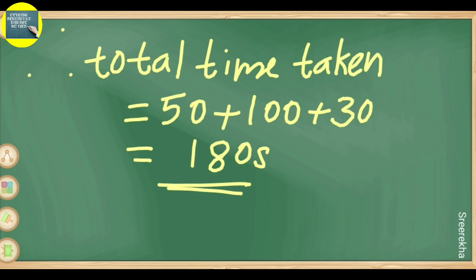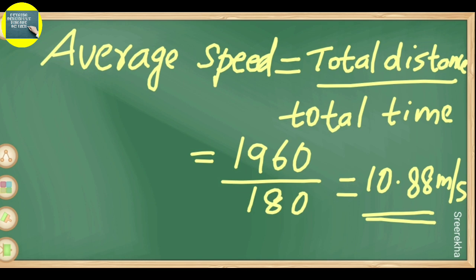Total time equals 50 plus 100 plus 30, which is 180 seconds. Average speed equals total distance divided by total time: 1960 divided by 180 equals 10.88 meters per second.